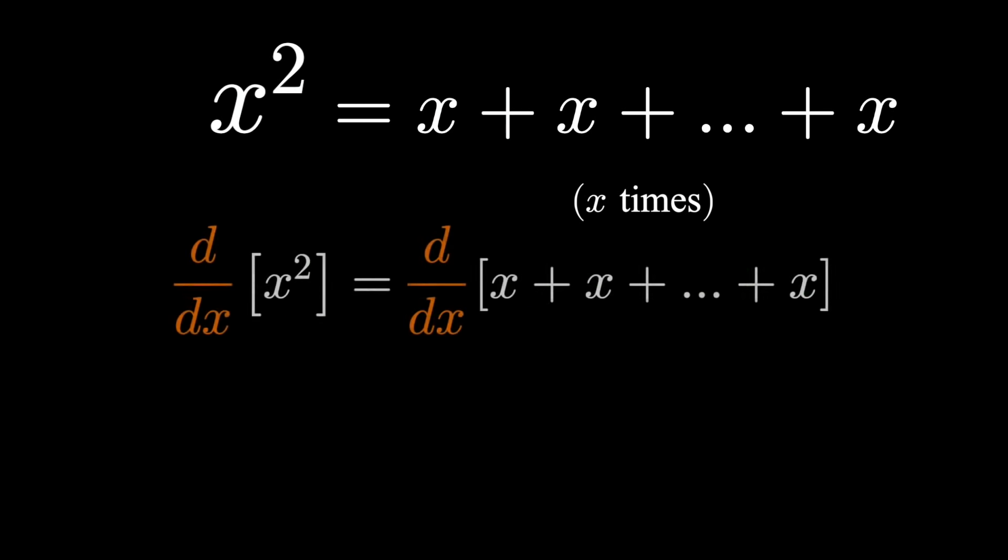Now take the derivative of both sides. On the left, it's just the power rule for derivatives. The derivative of x squared is 2x, and on the right, we need to differentiate each individual x and add them all up.